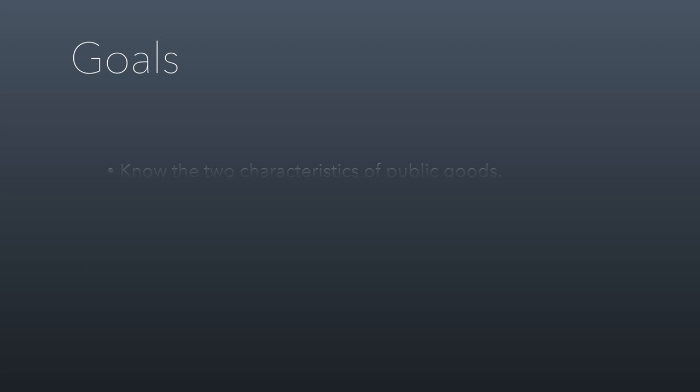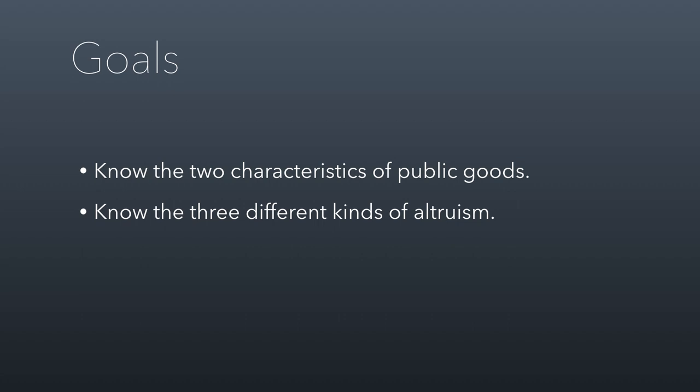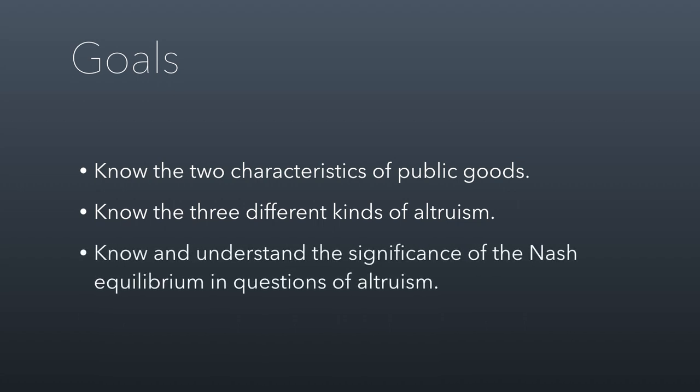For this first of the two class sessions, the goals are to know the characteristics of public goods, to know the three different kinds of altruism that we're going to discuss, and to know and understand the significance of something called the Nash equilibrium in questions of altruism. Those are the three concepts for this class session.